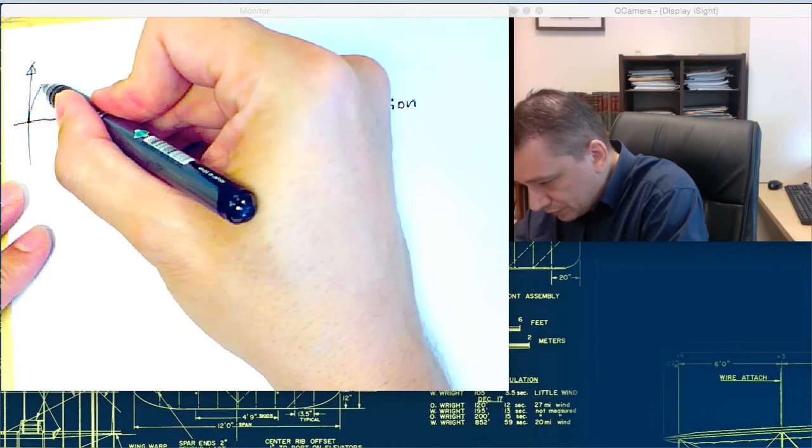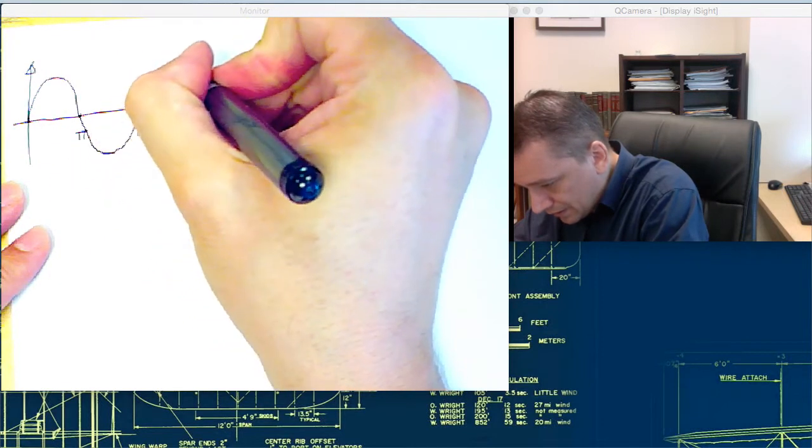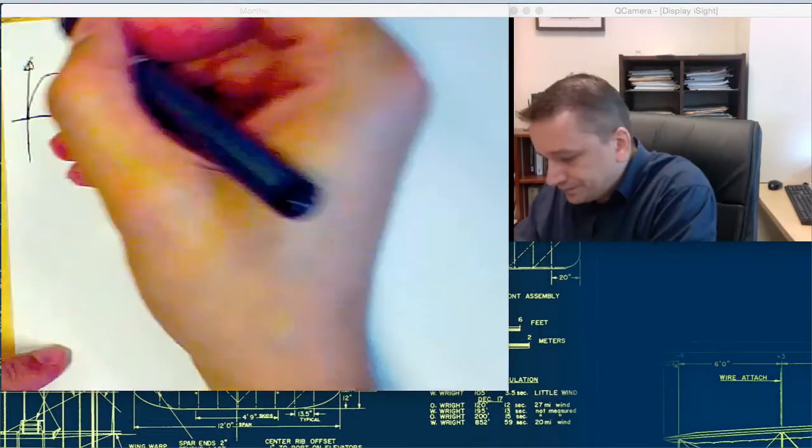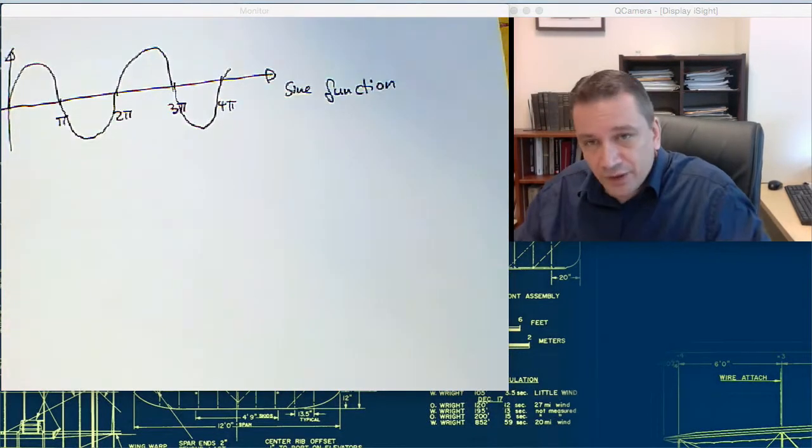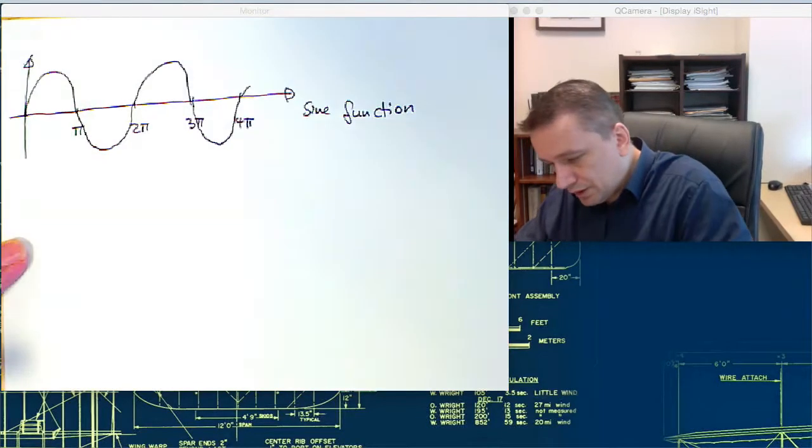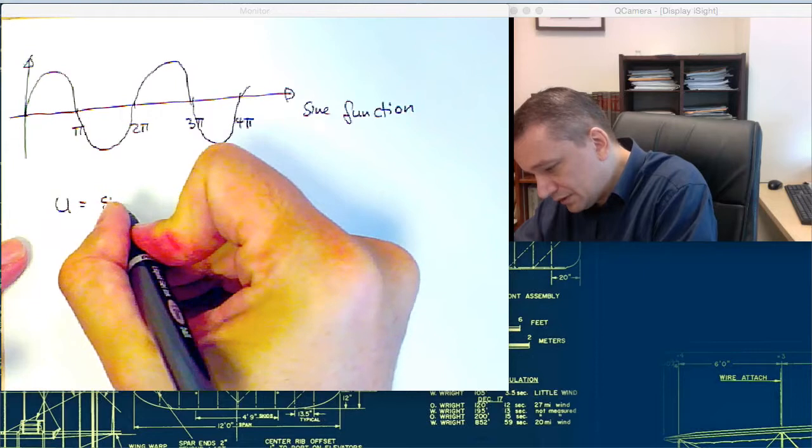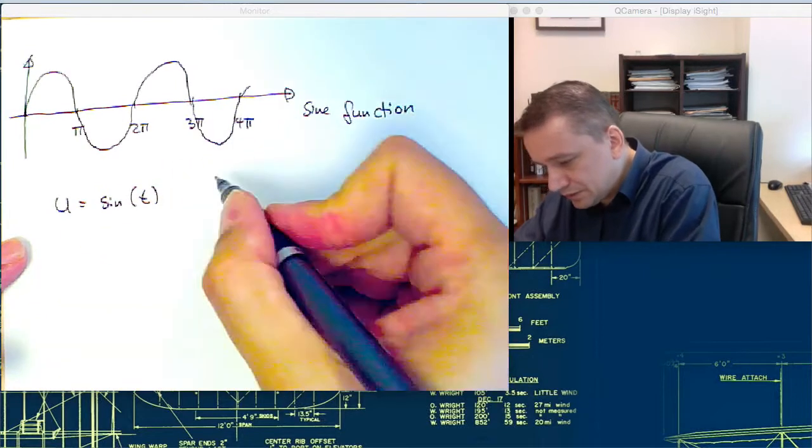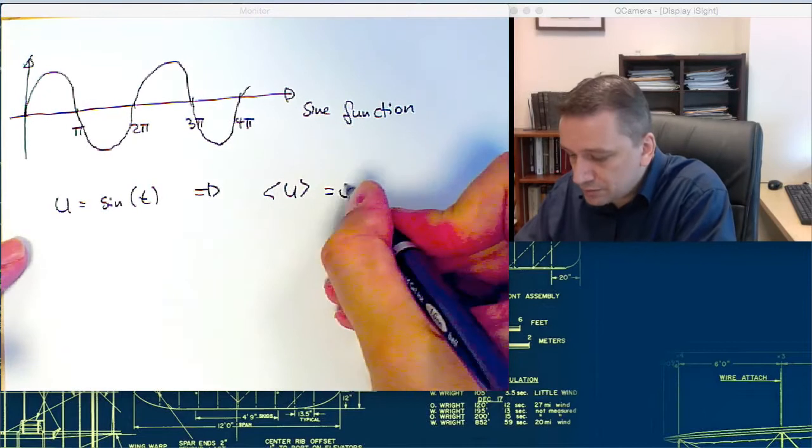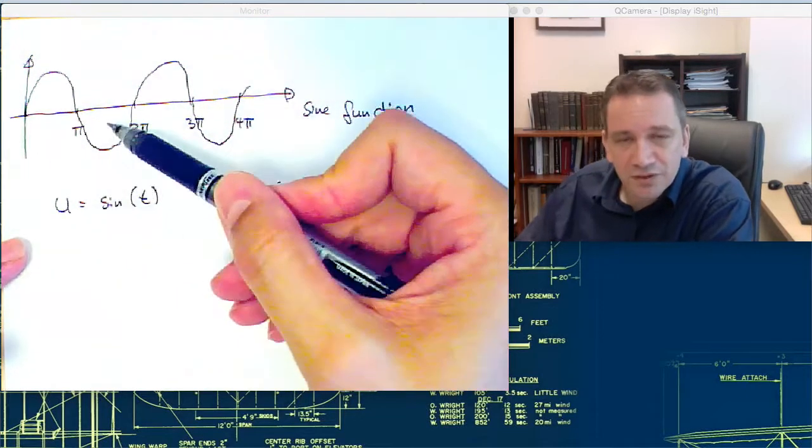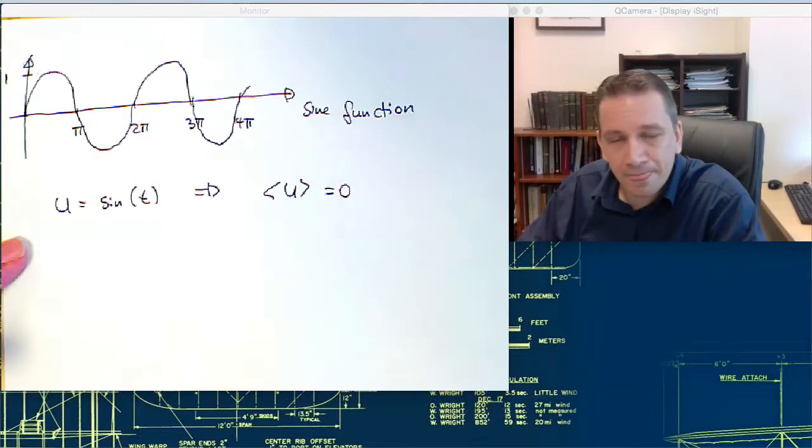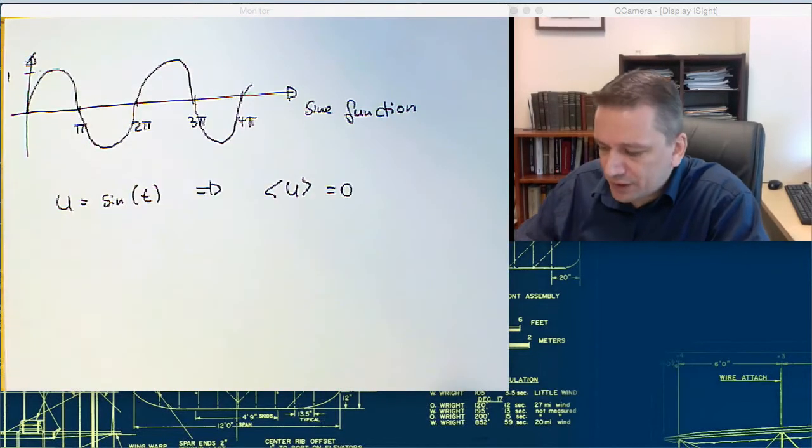So the mean value, so if u is sine of t, for example the mean value of that would be obviously zero. But since the value is not zero, we would like to know something about the amplitudes. And the amplitudes in this case would be one.